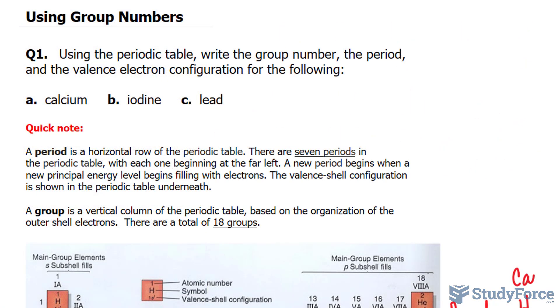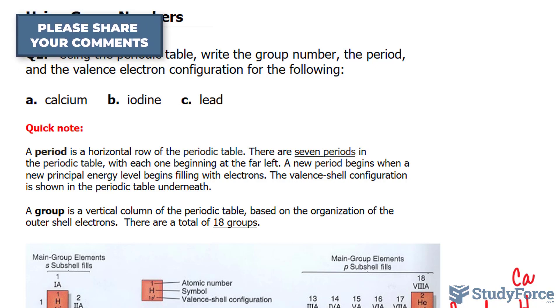And there you have it. That is how to use the periodic table to identify the group, period, and valence electron configuration.